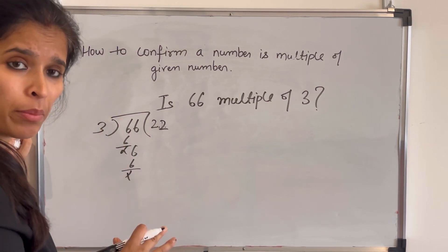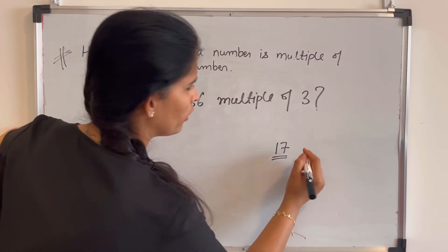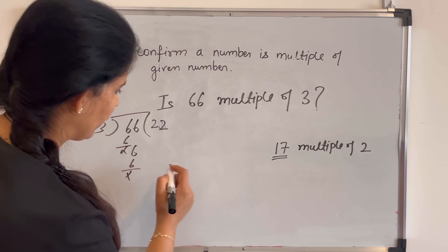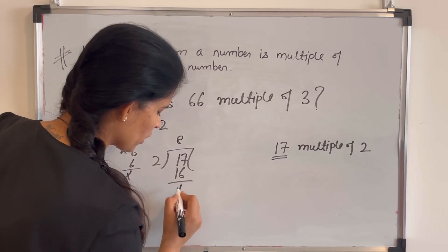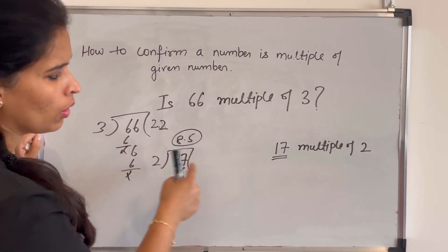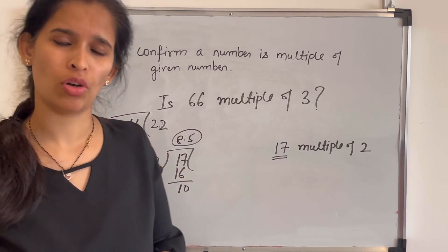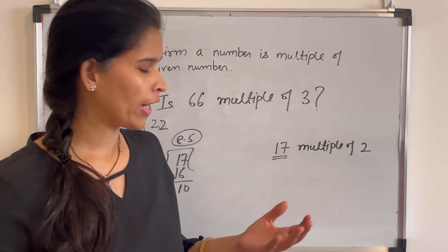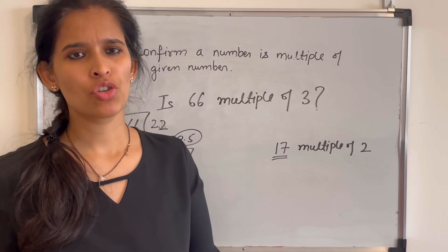Now let's assume the question is: is 17 a multiple of 2? We know that 17 is not completely divisible by 2 — 2 times 8 is 16, leaving a remainder of 1. So 17 is not completely divisible by 2, and therefore 17 is not a multiple of 2. I hope you understand the concept of factors and multiples. If you have any confusion, please write to me and I will reply. If you find these concepts useful, please share with your friends or students. Thank you!